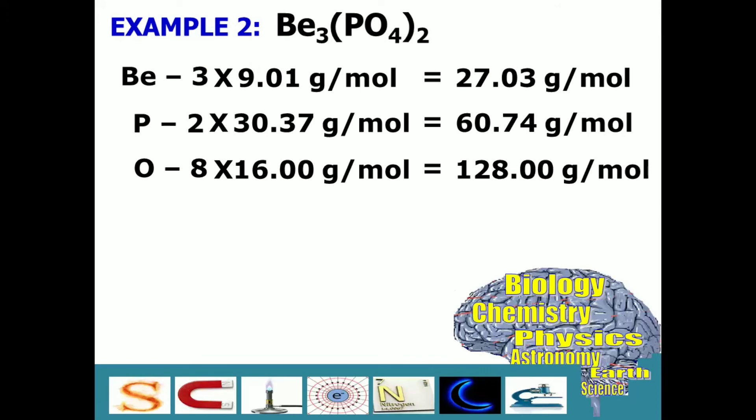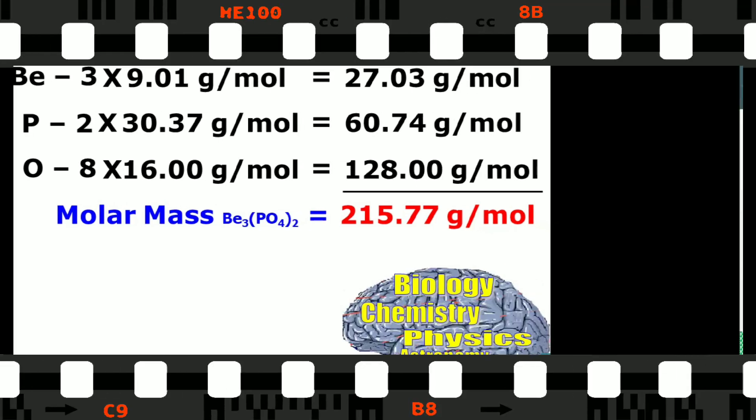Again, we have to add them up. Get your calculator and compute for the molar mass of beryllium phosphate. What is the result? Good job! It is 215.77 grams per mole. And that is the molar mass of beryllium phosphate.